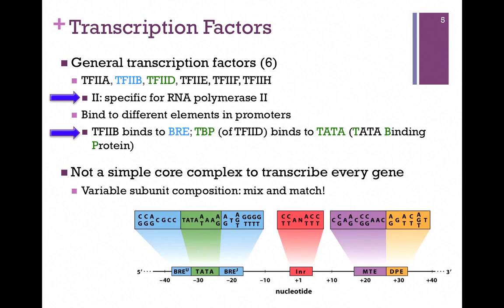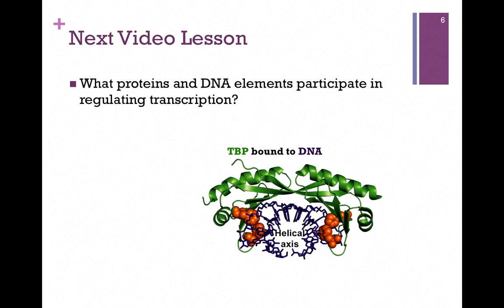The elements and transcription factors you're responsible for recognizing have been highlighted with an arrow. You need to recognize that TF2 refers to the fact that it's specific for RNA polymerase 2. You need to know that transcription factor 2B binds to BRE, and that TBP, or TATA binding protein, binds to the TATA box. In our next video lesson, we'll look at what proteins and DNA elements participate in regulating transcription.